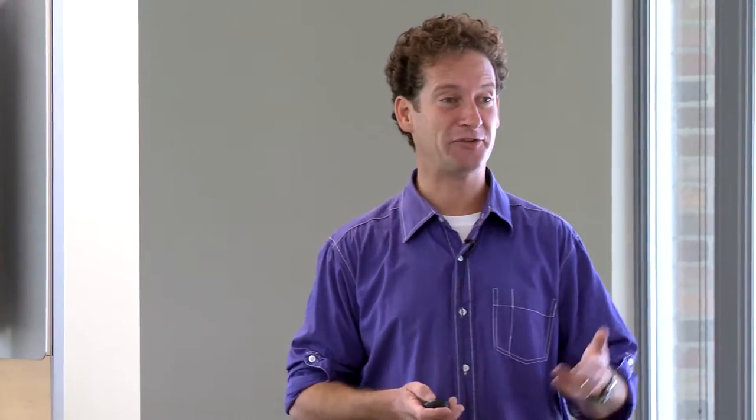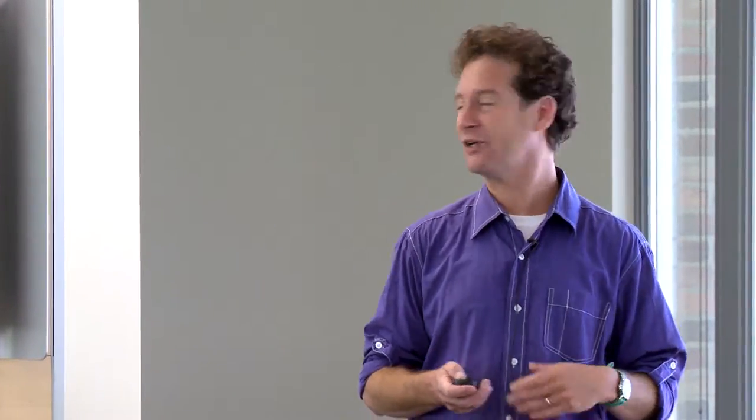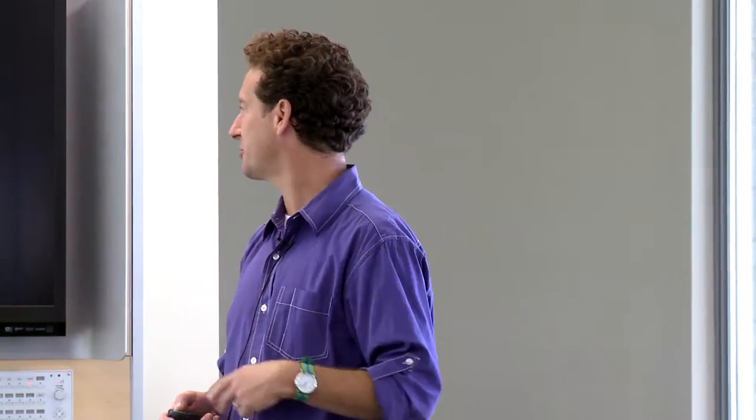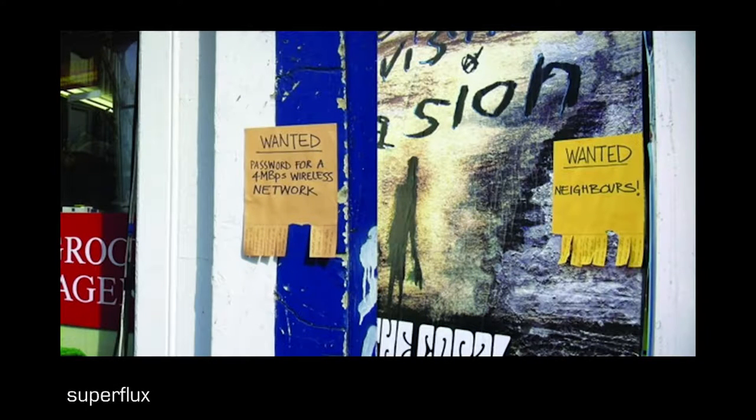She said she could put a Facebook post and say, I live in East London, I'm looking for a good restaurant, and tons of people would post it. But what she really wanted was someone to eat dinner with. So she passed out these Ziploc bags and left them around the neighborhood. And each of them included a cardboard she had prewritten wanted. And she noticed the things that people started posting. Someone wanted the password for a wireless network, and someone wanted neighbors.